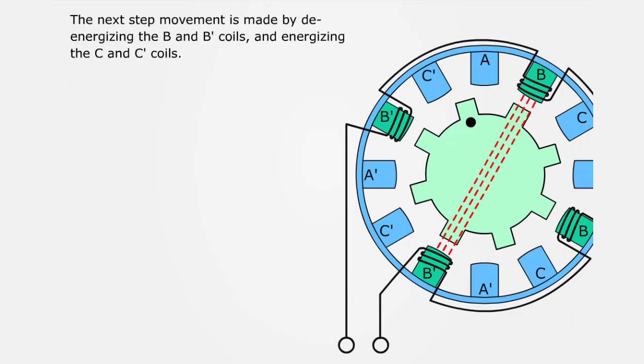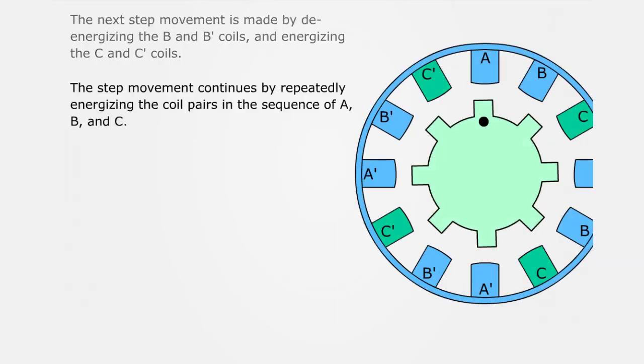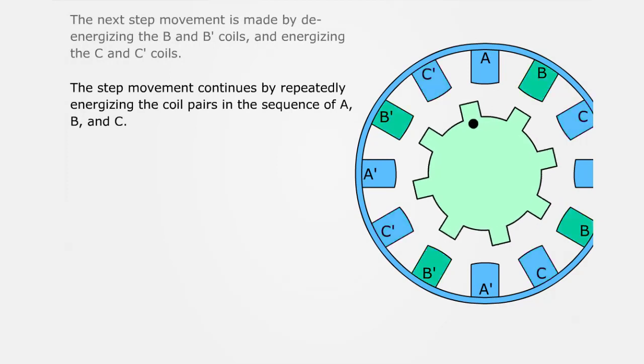The next step movement is made by de-energizing the B and B' coils and energizing the C and C' coils. The step movement continues by repeatedly energizing the coil pairs in the sequence of A, B, and C.